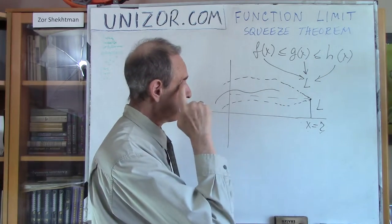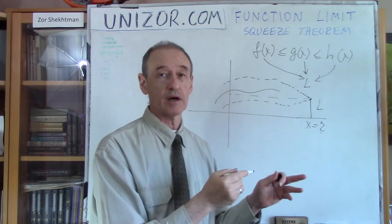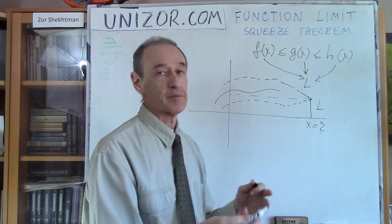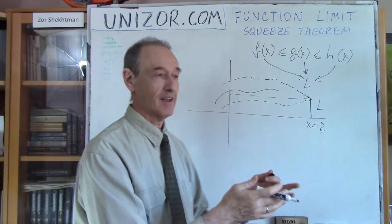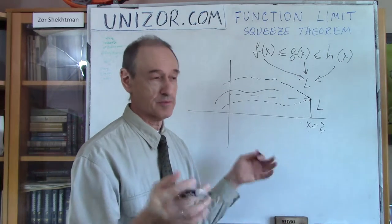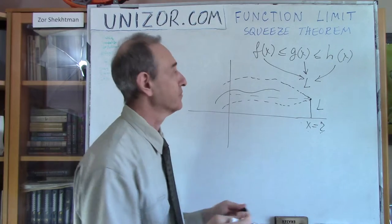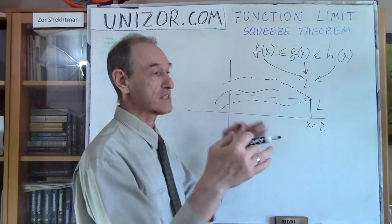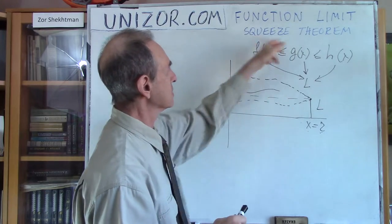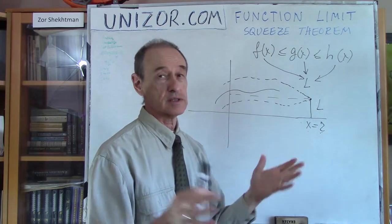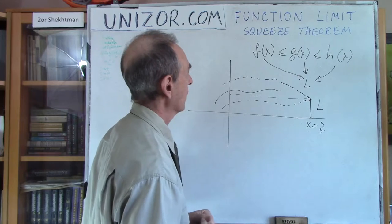So that's actually where the name two policemen and a drunk comes from because if they go to let's say some kind of police precinct he has no other choice because they are on both sides of him. Or a sandwich theorem or a squeeze theorem. So whatever you want to call it. More traditional is squeeze theorem at least in American schools.